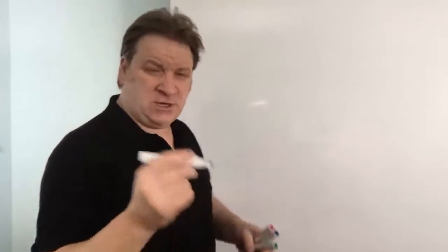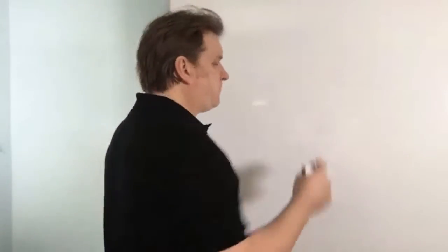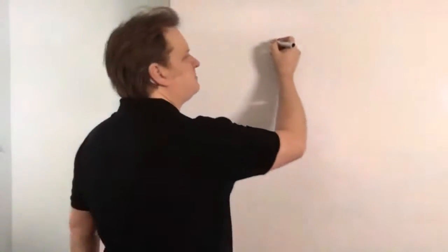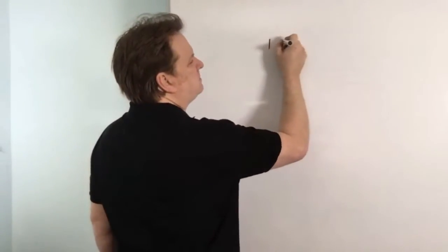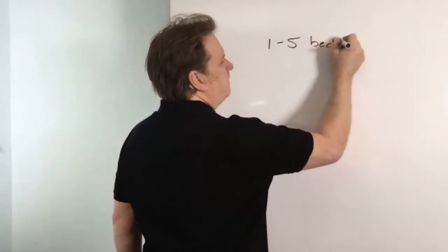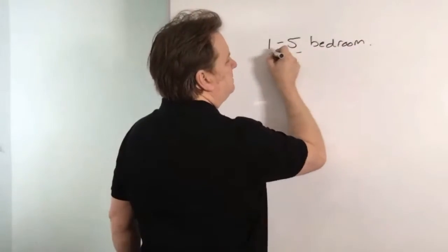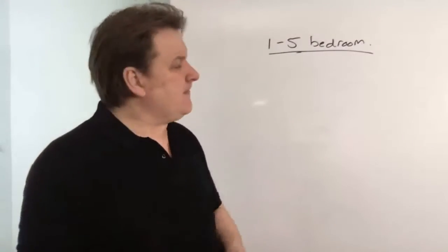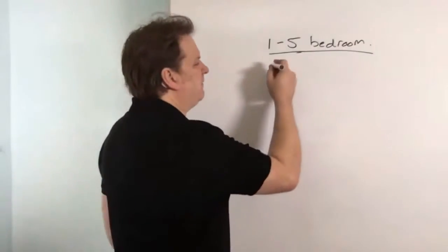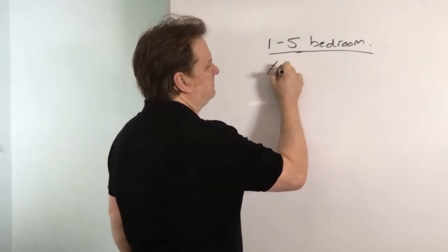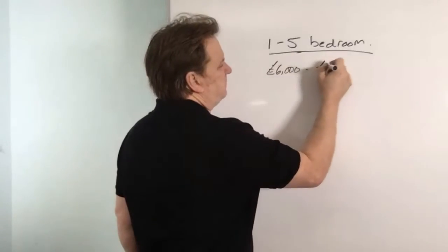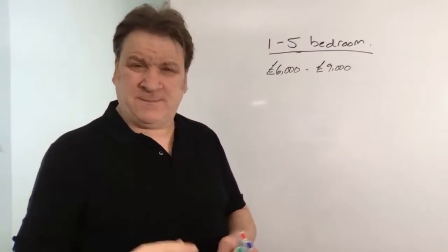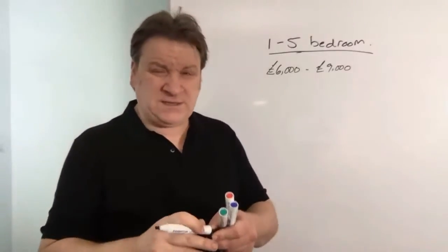Typically a firm will charge you to put a septic tank and soak away. Let's say you've got a one to five bedroom property, then typically - and there's loads of variables - but typically it's going to cost anywhere from six to nine thousand pounds to get someone to put the septic tank in for you. Why does it cost so much money?